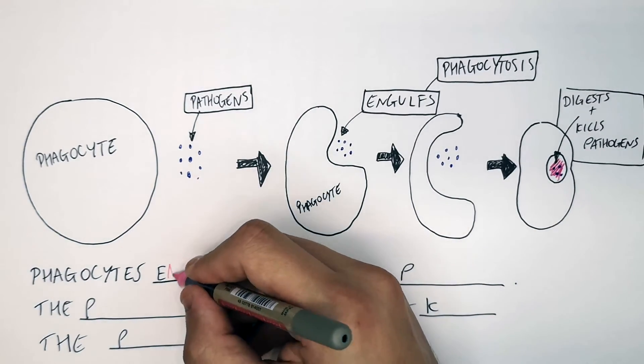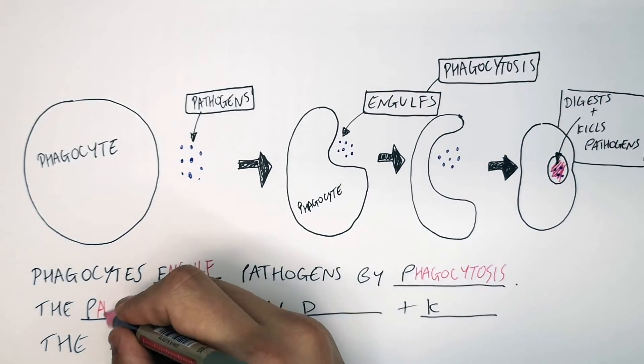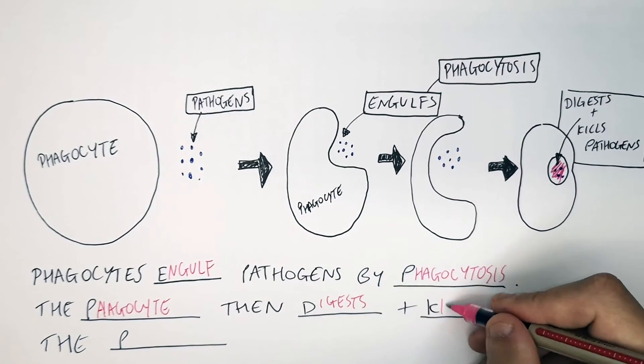Phagocytes engulf, not eat, pathogens by phagocytosis. The phagocyte will then digest and kill the pathogen.